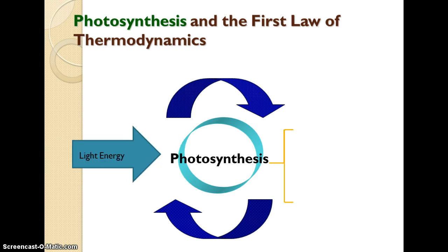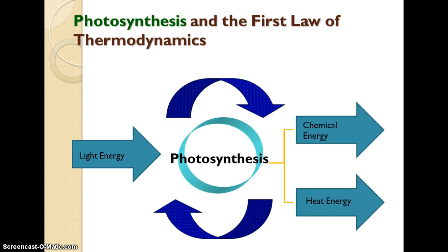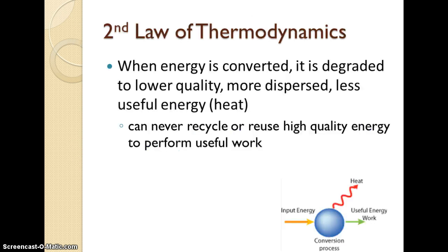With photosynthesis as a system, one of our inputs is light energy. We take that light energy and transform it into chemical energy in the form of glucose. Then we lose some of that energy as heat. We say that we lose it because it escapes the system, but we don't destroy the energy.